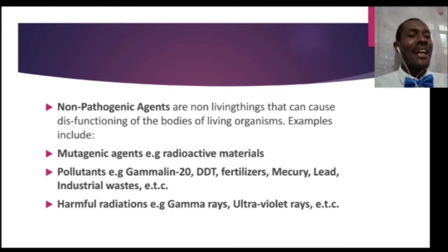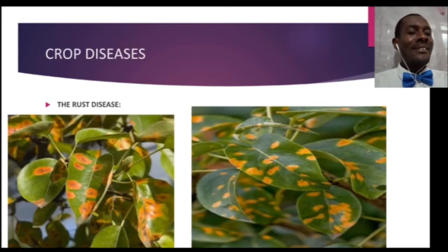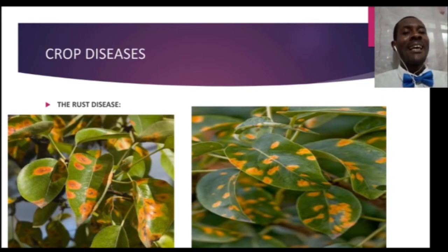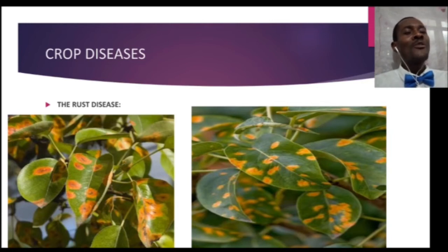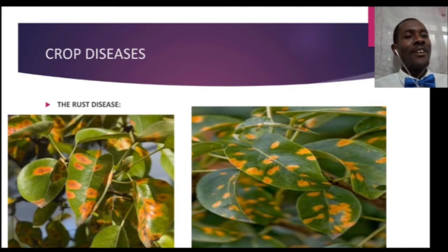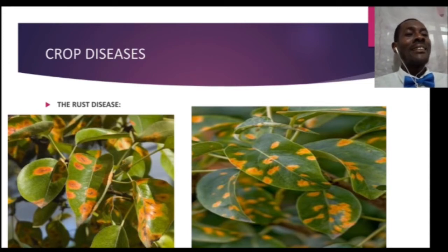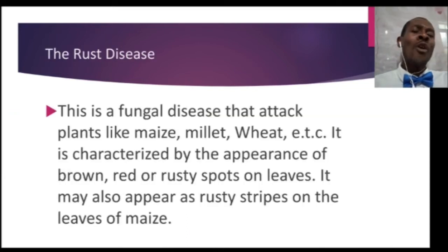Now, having seen the things that can cause diseases — both pathogenic and non-pathogenic agents — let's get on to the diseases themselves. On your screen, you can see leaves of crops of agricultural importance that have been infected. The natural color of leaves is green, which is the chlorophyll used for photosynthesis. Photosynthesis yields carbohydrates for the plant, providing energy for metabolic activities. But here the natural state has been altered by a disease — the rust disease.